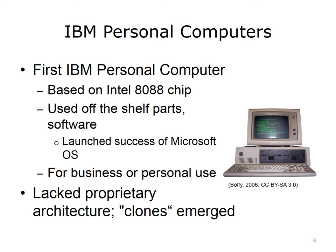The first IBM PC was based on the Intel 8088 chip. It used off-the-shelf parts and software, including compilers and operating systems from Microsoft. This, in turn, launched the success of Microsoft. Because its architecture wasn't proprietary, it led to the development of what were, at the time, called clones. Anyone could put together a PC using the same parts and design that IBM did. IBM PCs and clones were used for business and personal use and contributed to the personal computer becoming so popular.